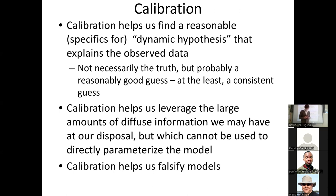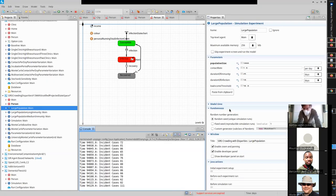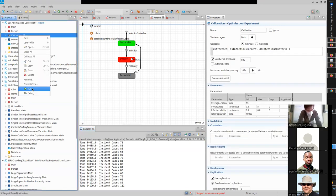What is calibration doing? It helps us find a reasonable specification for this dynamic hypothesis captured in the model — the dynamic hypothesis that explains the observed data. It's not that the model embodies truth, but calibration is a process that feeds us toward the truth by allowing us to identify a model that just doesn't cut it, can't align with empirical evidence, and has to be reconsidered. It challenges us in good ways, critiques our model, allows us to learn about the data, and helps us leverage the large amount of data often available in diffuse ways from the world. So — how does this all work? Well, you saw it in that model earlier. It's using a global optimization. If we go back to the SIR agent-based calibration and run it again, you notice it strives mightily to match this observed data, adjusting parameters to minimize the discrepancy.